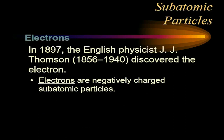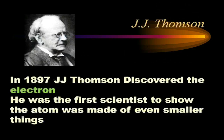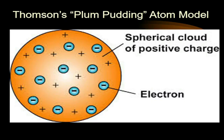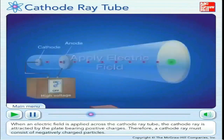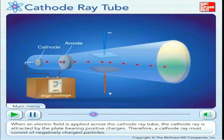J.J. Thomson was the first scientist to realize that the atom is made up of even smaller things, now called subatomic particles. He theorized that the electron is embedded in a sphere of positively charged matter. He called his model the plum pudding model — the plum represents the negatively charged electron, and the pudding represents the positively charged part of the atom.